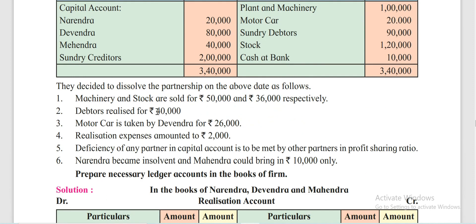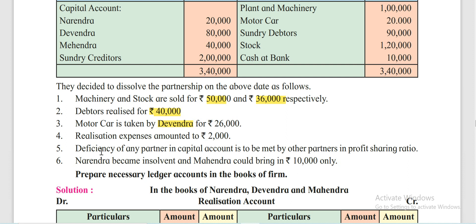This is the balance sheet. They decided to dissolve the partnership as follows: Machinery and stock are sold for Rs 50,000 and Rs 36,000 respectively. Debtors realized for Rs 40,000. Motor car is taken by Devendra for Rs 26,000. Realization expenses amounted to Rs 2,000. Deficiency of any partner in the capital account is to be made good by the other partners in profit sharing ratio.